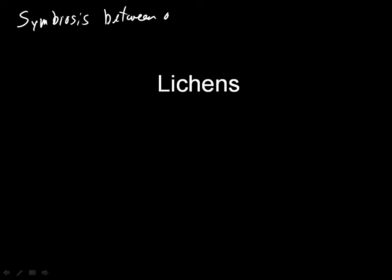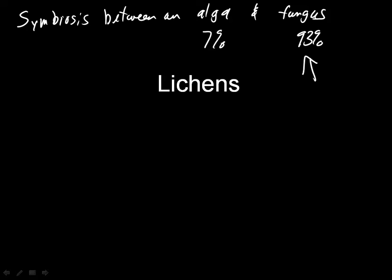A lichen is a symbiosis between an alga and a fungus. The alga makes up about 7% of the lichen, the fungus makes up about 93% of the lichen, and the fungus is mostly — almost always — an Ascomycota, which is why we cover them now. Sometimes, not as commonly, it's a member of the Basidiomycota.